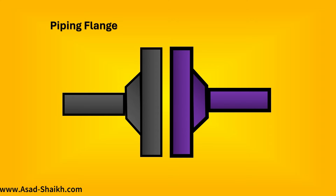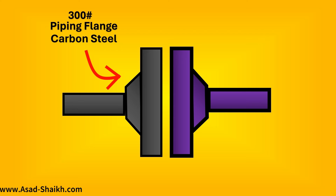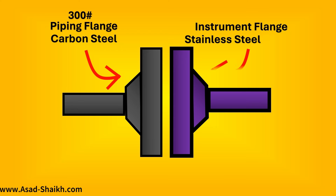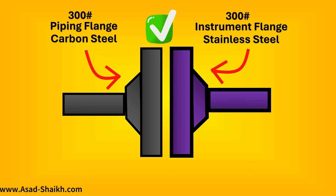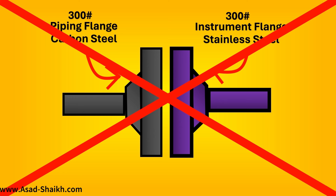For example, here is a piping flange made up of carbon steel with a 300 pound rating. Now, if you have an instrumentation flange made up of SS316 or stainless steel material, what should be the flange rating? The answer might seem to be 300, because it should follow the piping department — but this answer is absolutely incorrect.